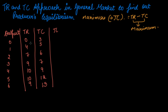At zero output, revenue is nothing but total cost is 3. Why is total cost 3? Because your total cost includes variable cost plus fixed cost. You will incur your fixed cost in any situation, even if you produce zero output. That is the reason your total cost is 3 here.